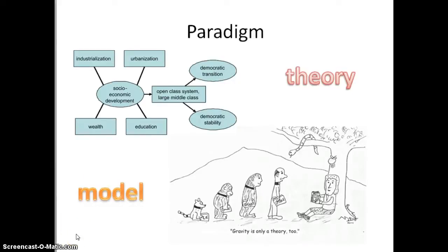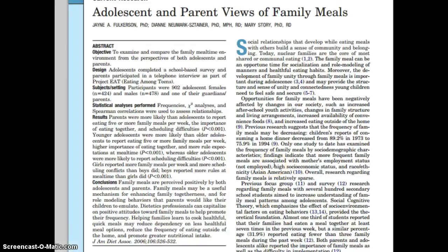The paradigm can often be found in the introduction section. Back to the example we were just looking at — here in the beginning you can see the background. It doesn't list a theory specifically, but it's talking about social relationships and the importance of social relationships. They're assuming that what happens when you're together as a family will affect other parts of life — so what happens while you're eating a meal together may be beneficial to members of the family. That's systems theory. We also have socialization and role modeling, which are parts of theories. So even when they don't specifically list a theory, the paradigm is that basis for which they're building the momentum behind the research study or article.